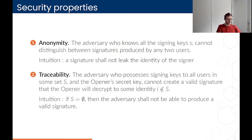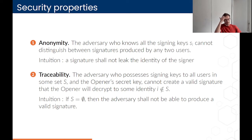The second property is traceability, which is the equivalent of unforgeability for group signatures. If the adversary has some signing keys in a set S and the opener secret key, then the adversary should not be able to create a valid signature such that the opener, when decrypting the identity from the signature, finds an identity the adversary does not possess. This is the equivalent of unforgeability: if S is the empty set, the adversary cannot produce any valid signature at all.